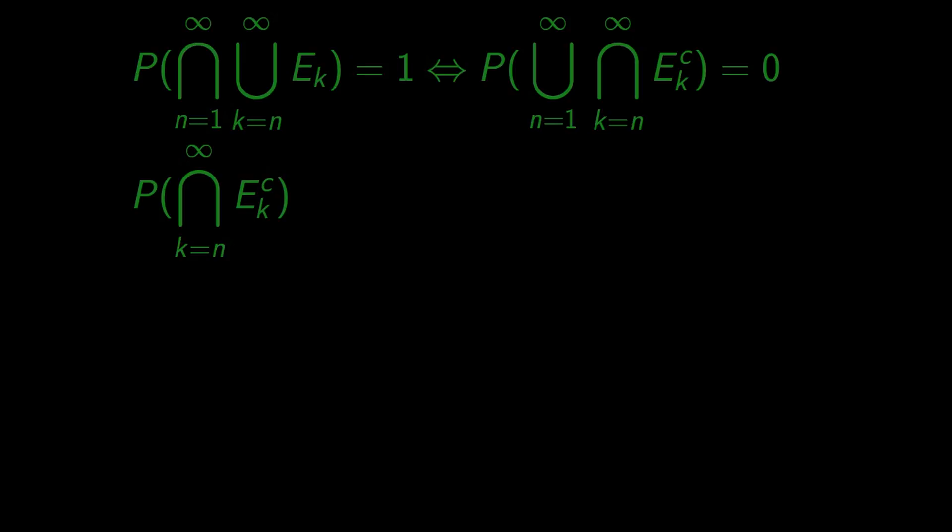If they are independent, the probability of their intersection is the product of probabilities of each of them being unsuccessful. This is equal to 1 minus the probability of a successful trial.